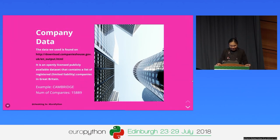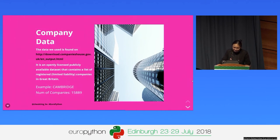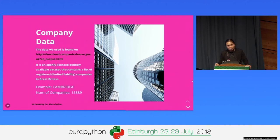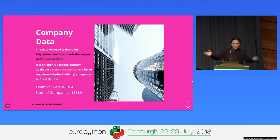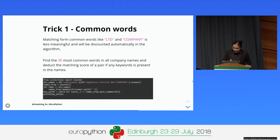Now for my use case: I have company data, but I'll use an example dataset rather than my company's confidential client data. I downloaded a public open-license UK companies database - companies with limited liability must have their information public. There are a lot of companies in this country. I used Cambridge because there are lots of startups there. Even filtered to Cambridge, there are about 15,000 companies - quite a lot.